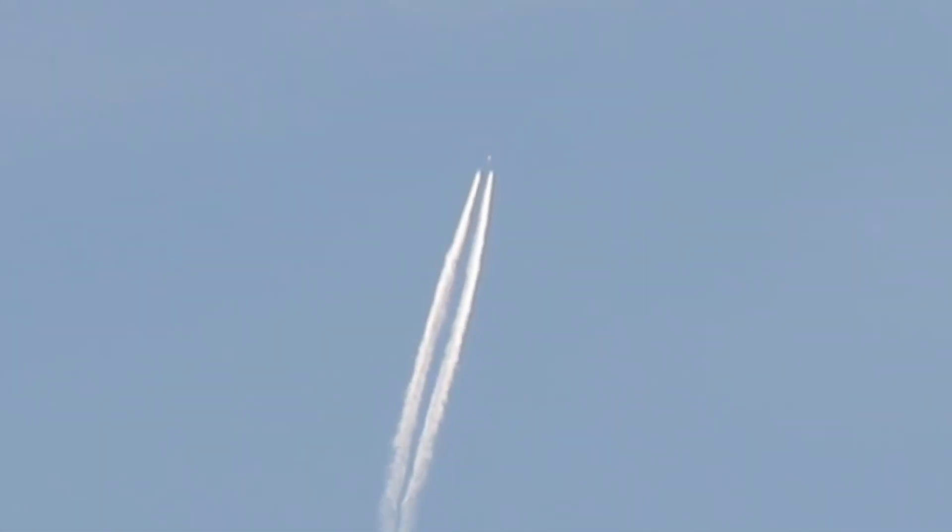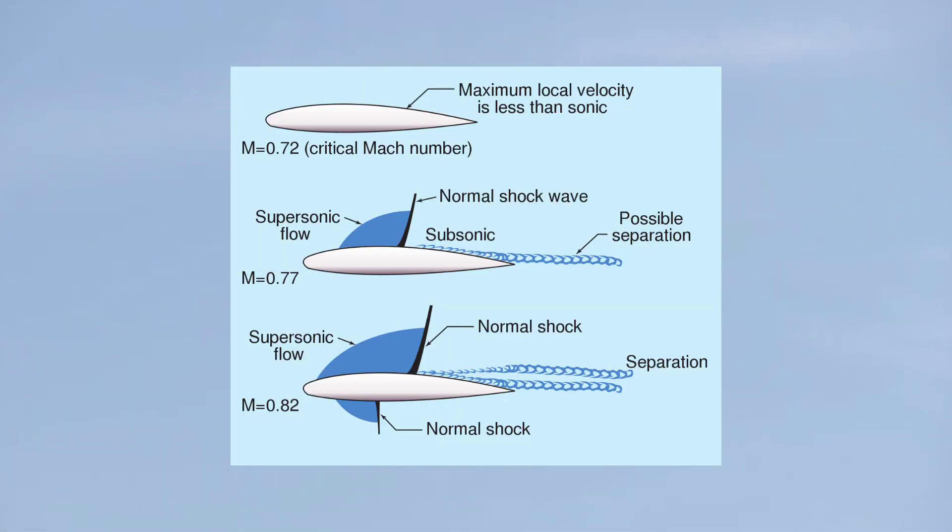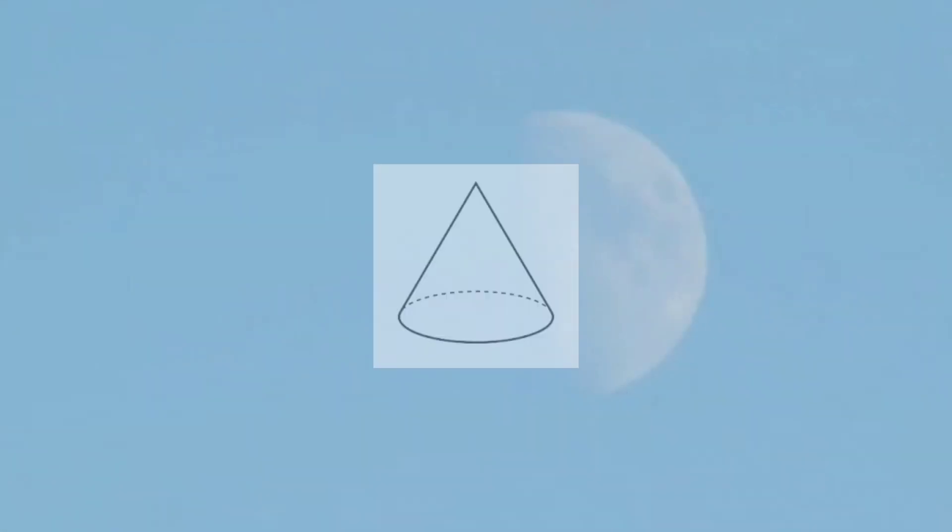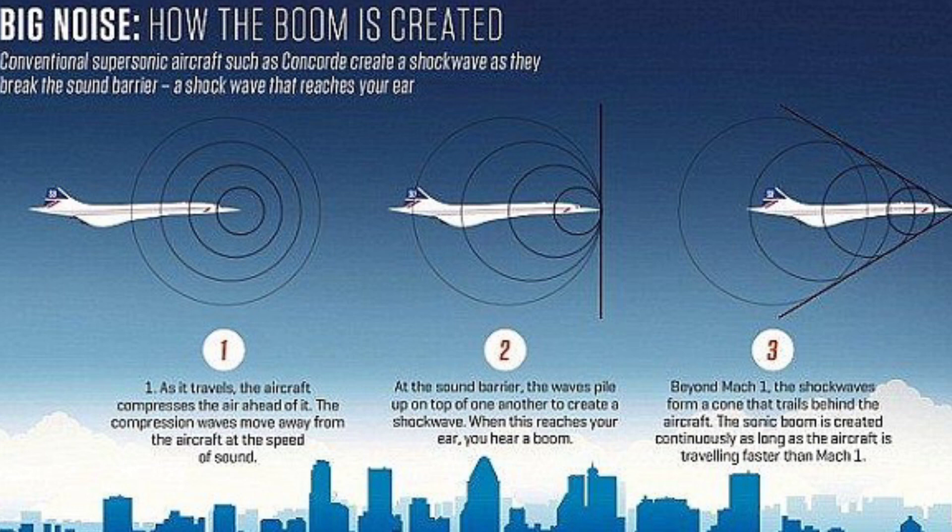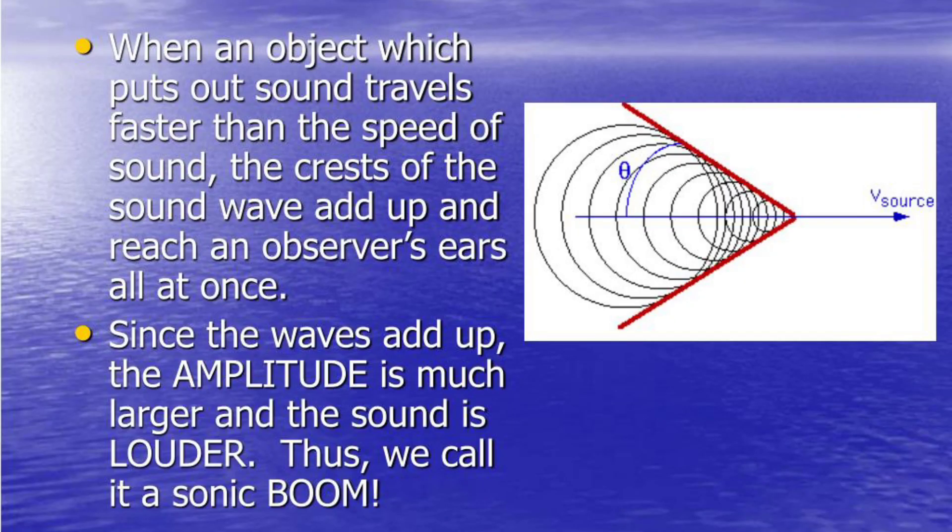these pressure waves are created and a large conical structure is formed behind the jet in the form of a cone, which can be seen when the object approaches speeds greater than the speed of sound.